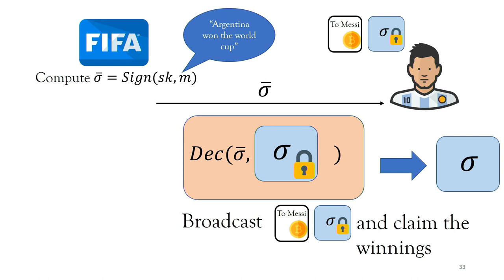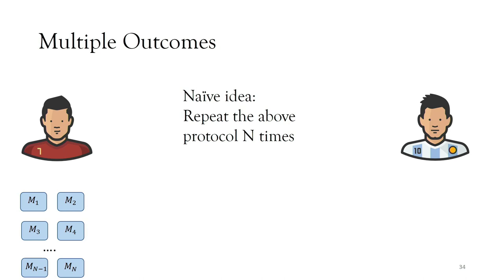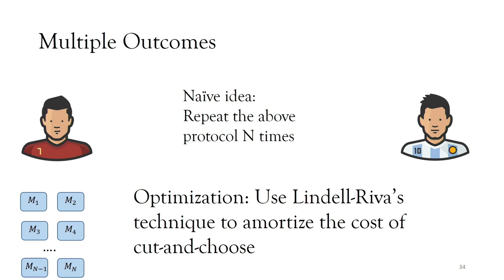Our paper also handles multiple outcomes. There could be many possible outcomes — Argentina wins the World Cup, Argentina wins 2-0, Messi scores a goal — and a naive approach would repeat the protocol n times for n outcomes. Instead, in our paper we find a way to optimize this using Lindell and Riva's technique to amortize cut-and-choose, which they originally did for garbled circuits. We show it can be applied to witness encryption schemes as well.